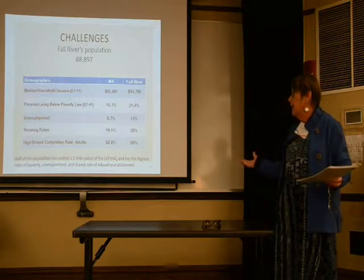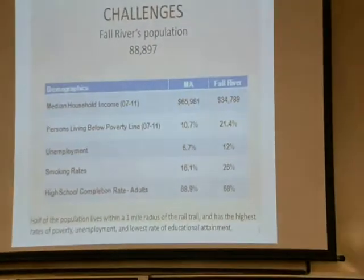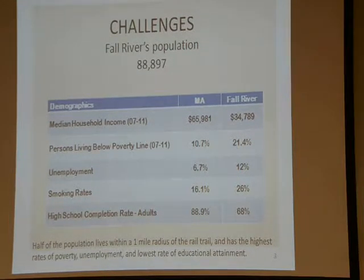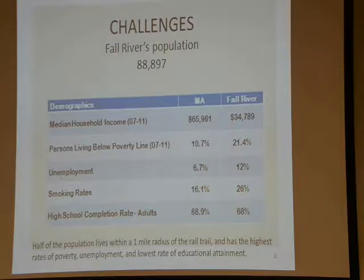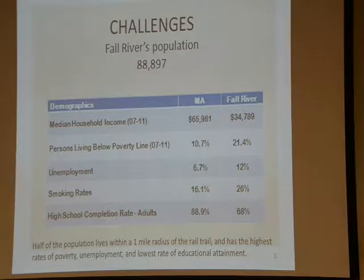These are some of the challenges. Half of the population of Fall River lives within a one-mile radius of the rail trail. That population has the highest rates of poverty, unemployment, and the lowest rate of educational attainment. The blend of ethnicities includes Portuguese, Spanish, Cambodian, and African American. One-third of this population do not have vehicles, so walking and transit are important resources for them.